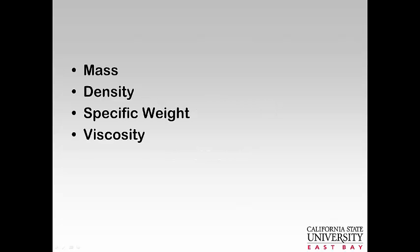A few terms: mass, which is the quantity of matter in kilograms — we've seen that in F equals ma. We have the density of an object, which is the mass per volume. We compared the density of a bowling ball versus a volleyball — same volumes, very different densities.